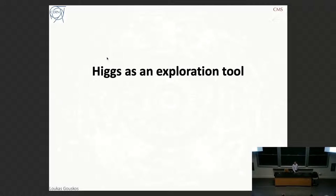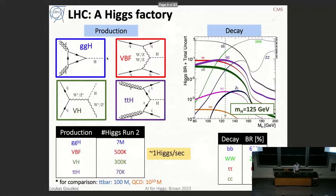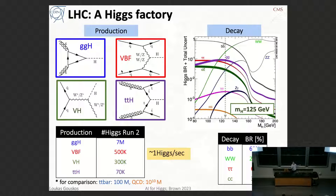Since the discovery of the Higgs boson, we enter a new era and can consider the LHC as a Higgs factory. The four main production modes are gluon-gluon fusion — by far the dominant — vector boson fusion, Higgs in association with the W or Z boson, and in association with a top-quark pair. During the second run of the LHC, we produced around 7 million Higgs bosons — effectively a Higgs every second. Some important backgrounds are two orders of magnitude larger for tt-bar, and many orders of magnitude more background from QCD processes like quarks and gluons.